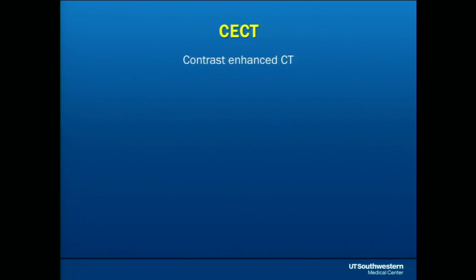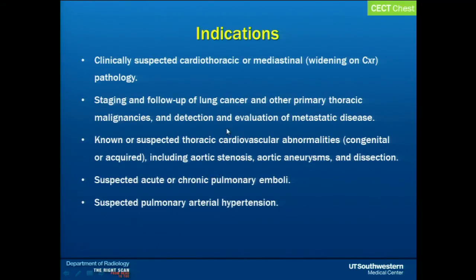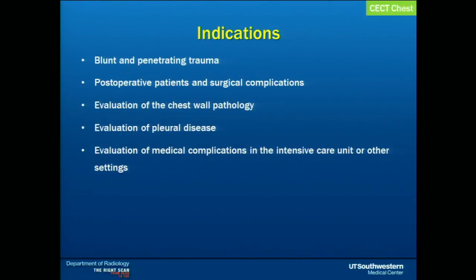Lastly, I will be talking about contrast-enhanced CT scan of the chest. The main indications are clinically suspected cardiothoracic or mediastinal pathology, and staging and follow-up of lung cancer and other extra-thoracic malignancies. Also, known or suspected thoracic cardiovascular abnormalities like aortic stenosis, aneurysm, and dissection — Dr. Abara has talked in great detail about that. Additionally, evaluation of suspected acute or chronic pulmonary emboli, pulmonary arterial hypertension, blunt and penetrating trauma, post-operative patients and surgical complications, chest wall pathology, pleural diseases, and medical complications in the ICU.